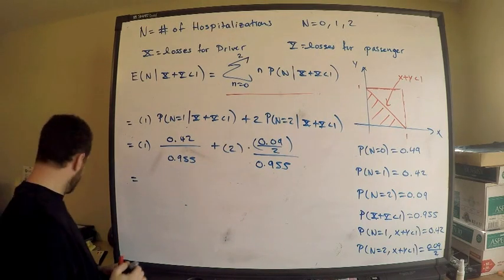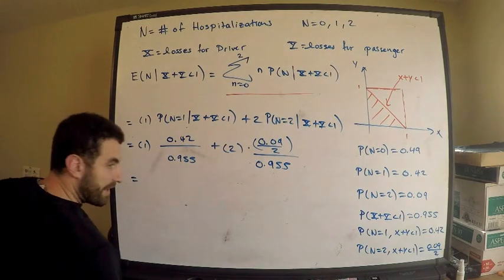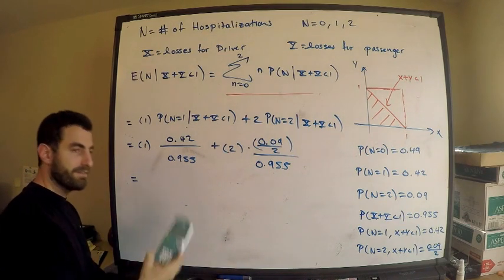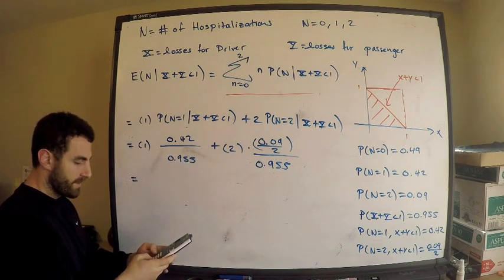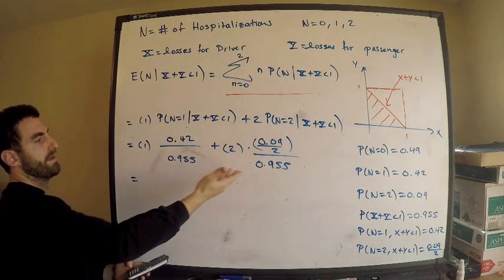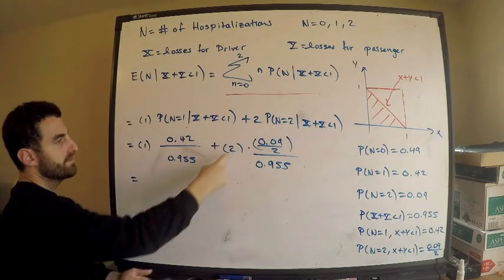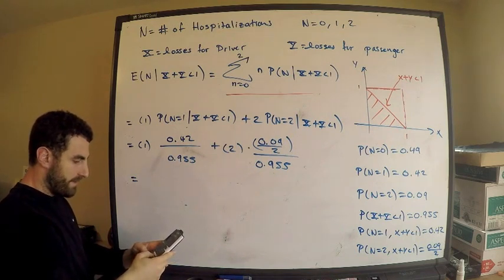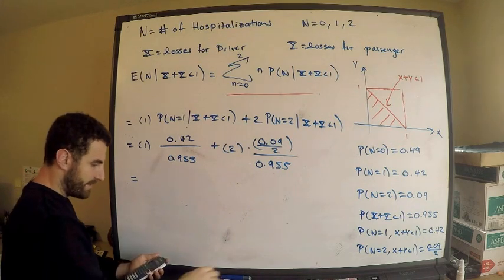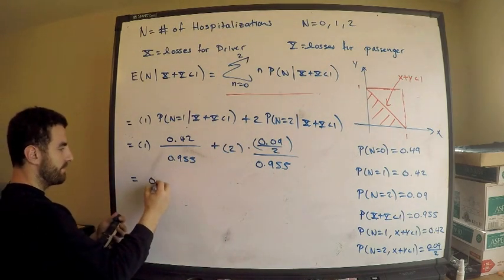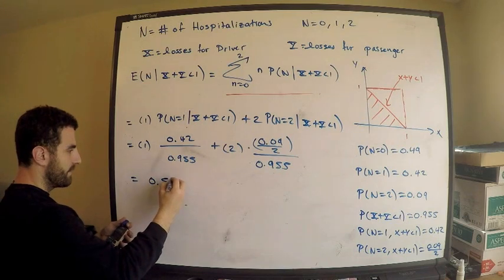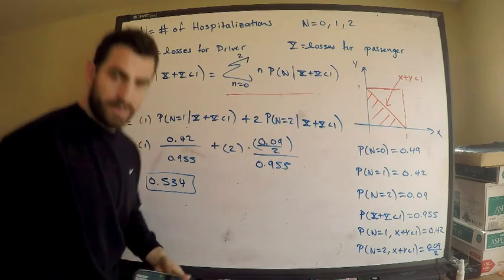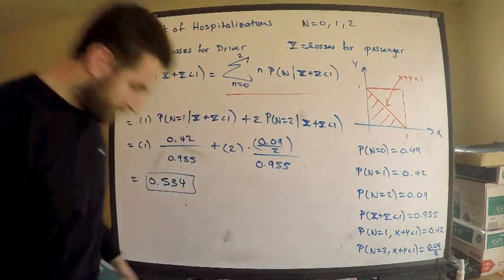Let me just make sure this equals what I think it equals. These have the same denominator, so I add the numerators — the twos cancel, so it's 0.42 plus 0.09 divided by 0.955. This gives 0.534. And I think that answer is B. Wonderful.